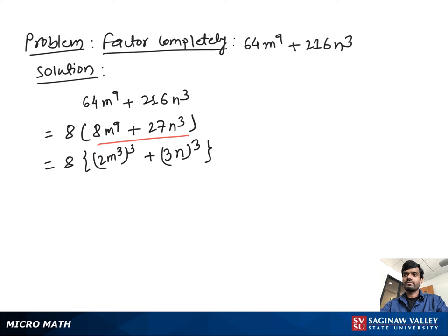Now we focus—it looks like a^3 + b^3 form. We know a^3 + b^3 equals (a + b)(a^2 - ab + b^2). If we suppose 2m^3 as a and 3n as b...